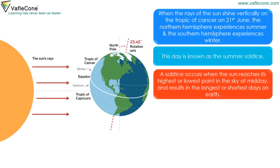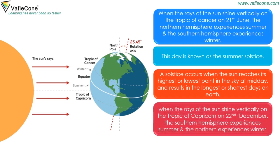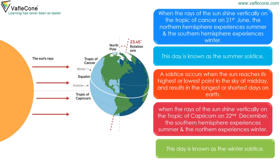A solstice occurs when the sun reaches its highest or lowest point in the sky at midday, resulting in the longest or shortest days on Earth. When the rays of the sun shine vertically on the Tropic of Capricorn on 22nd December, the southern hemisphere experiences summer and the northern hemisphere experiences winter. This day is known as winter solstice.